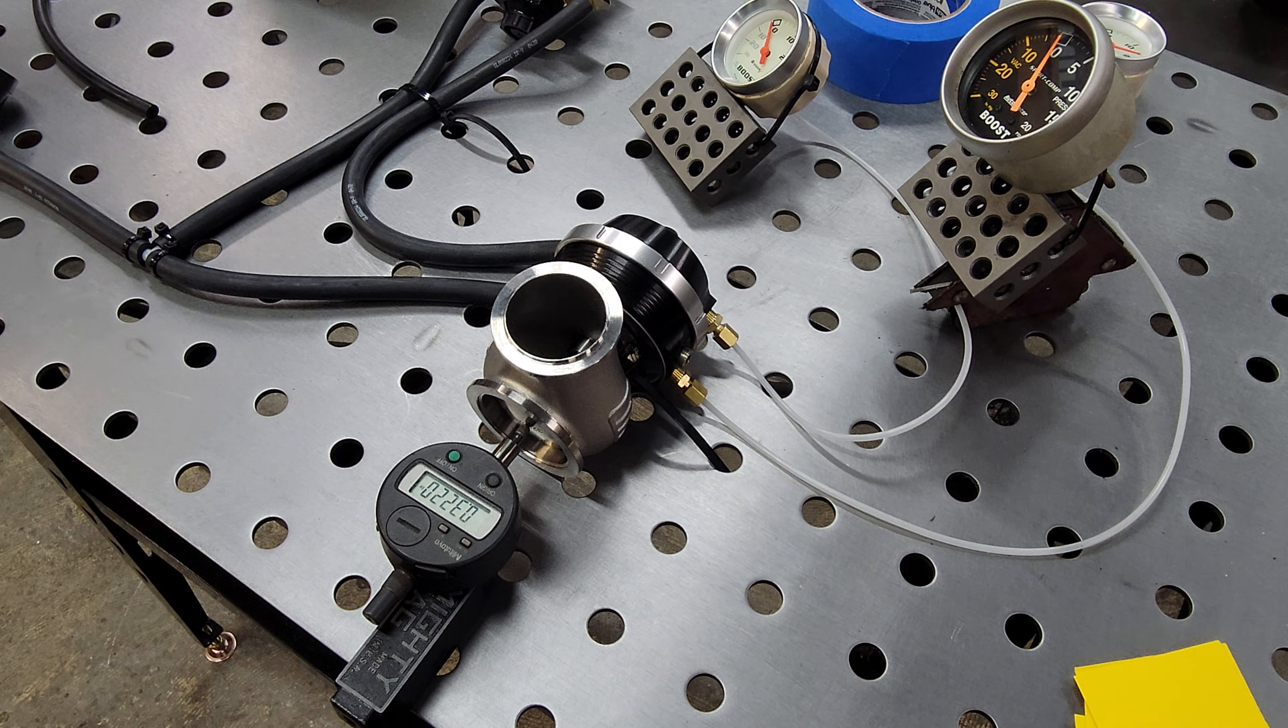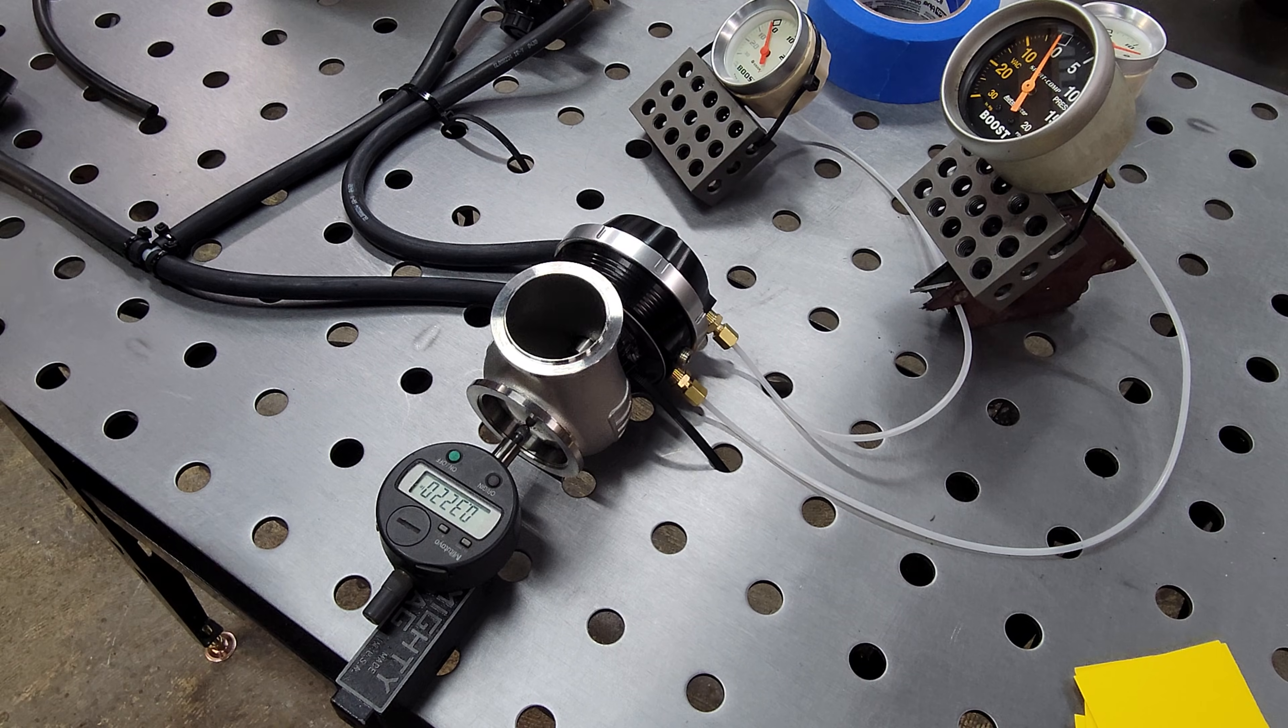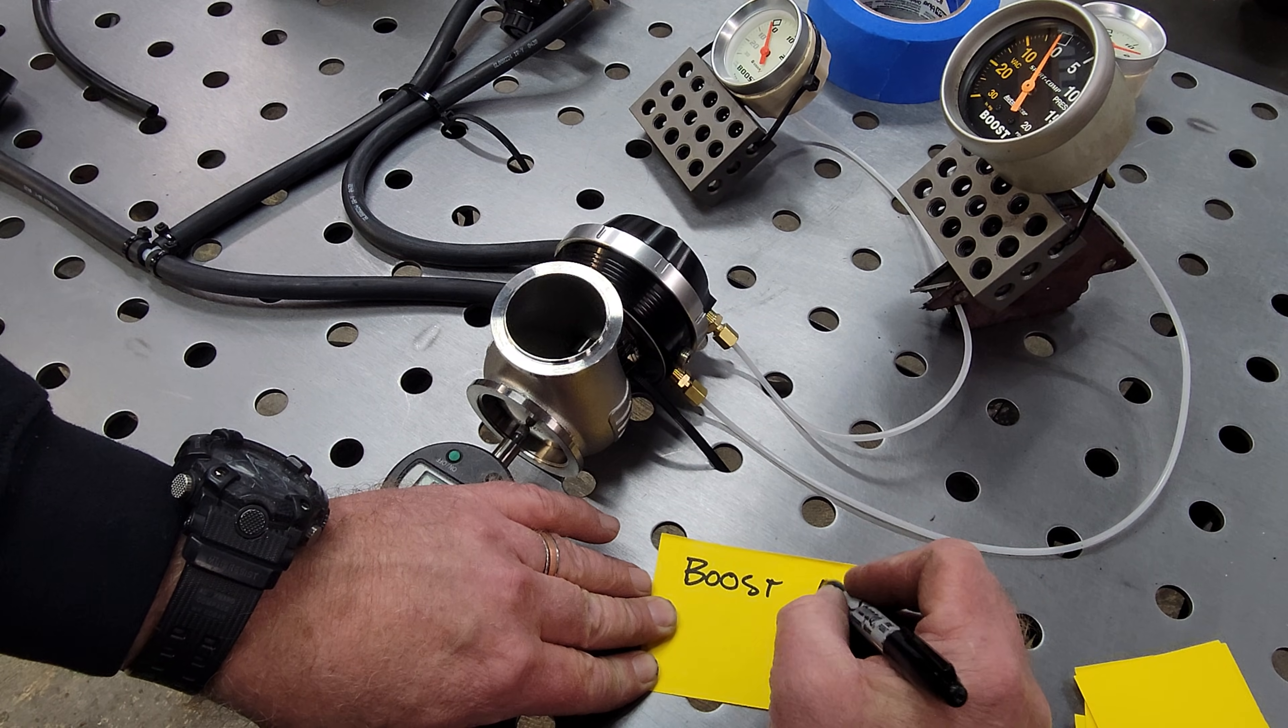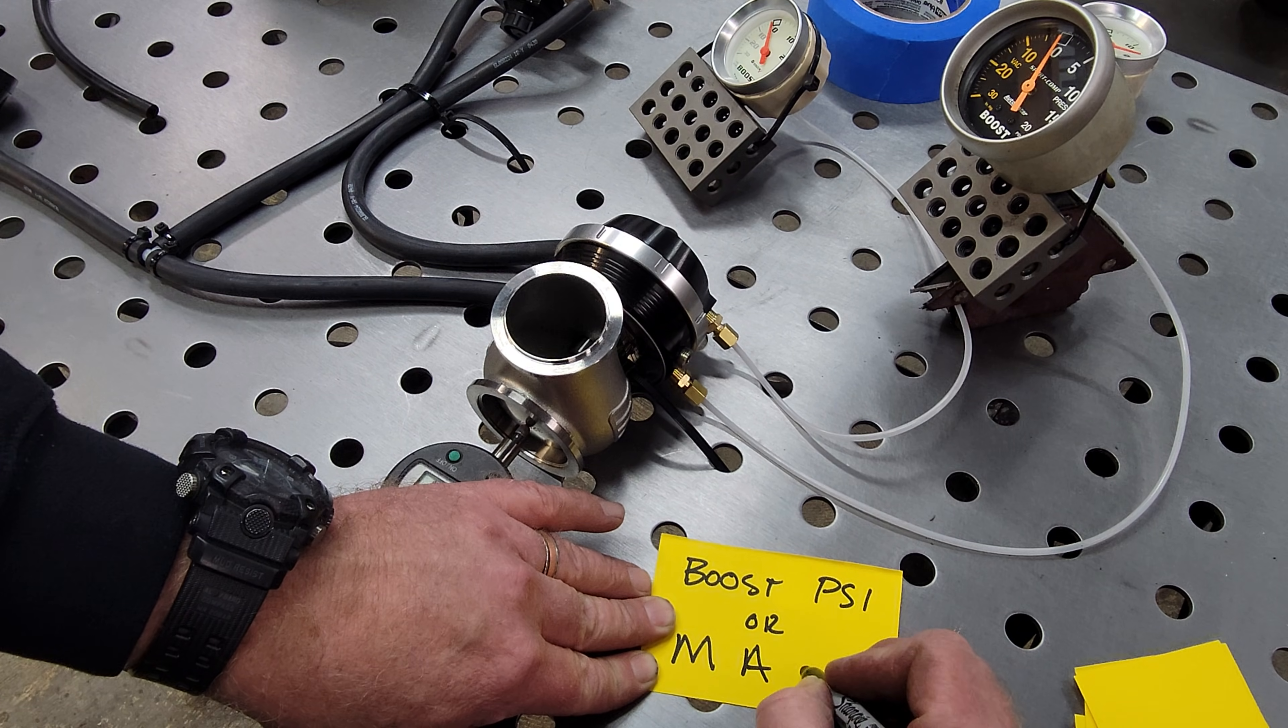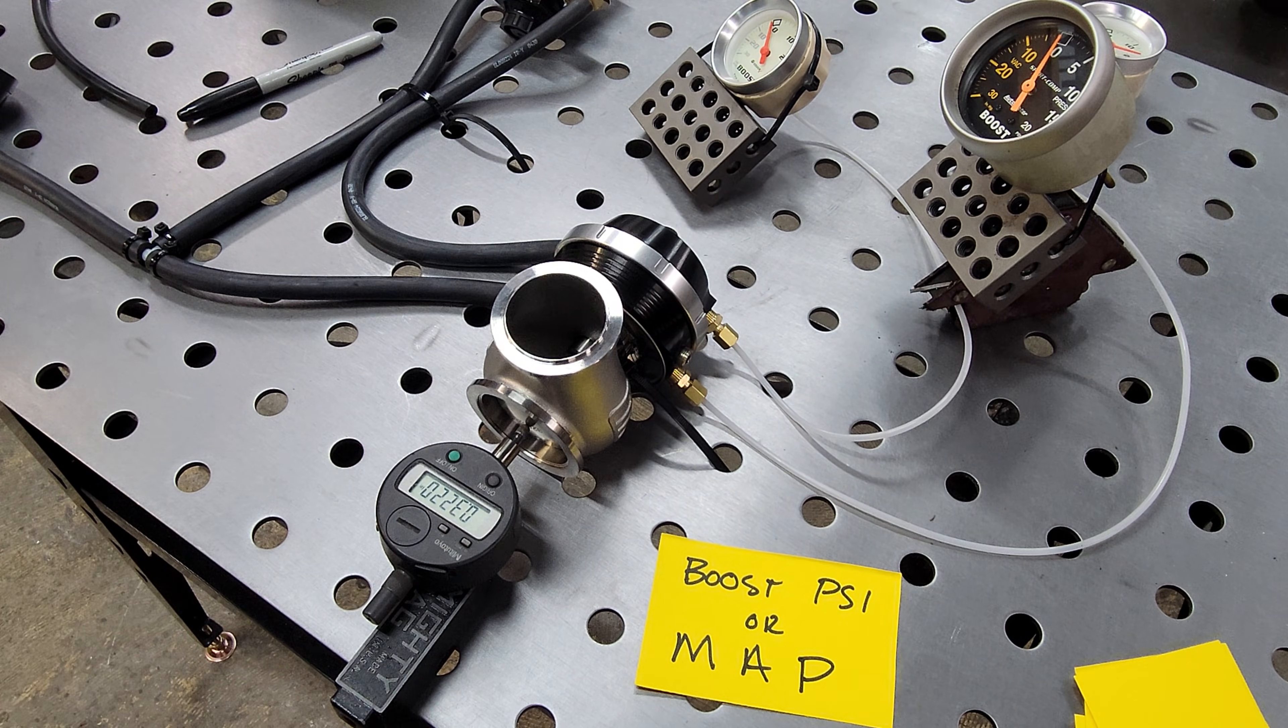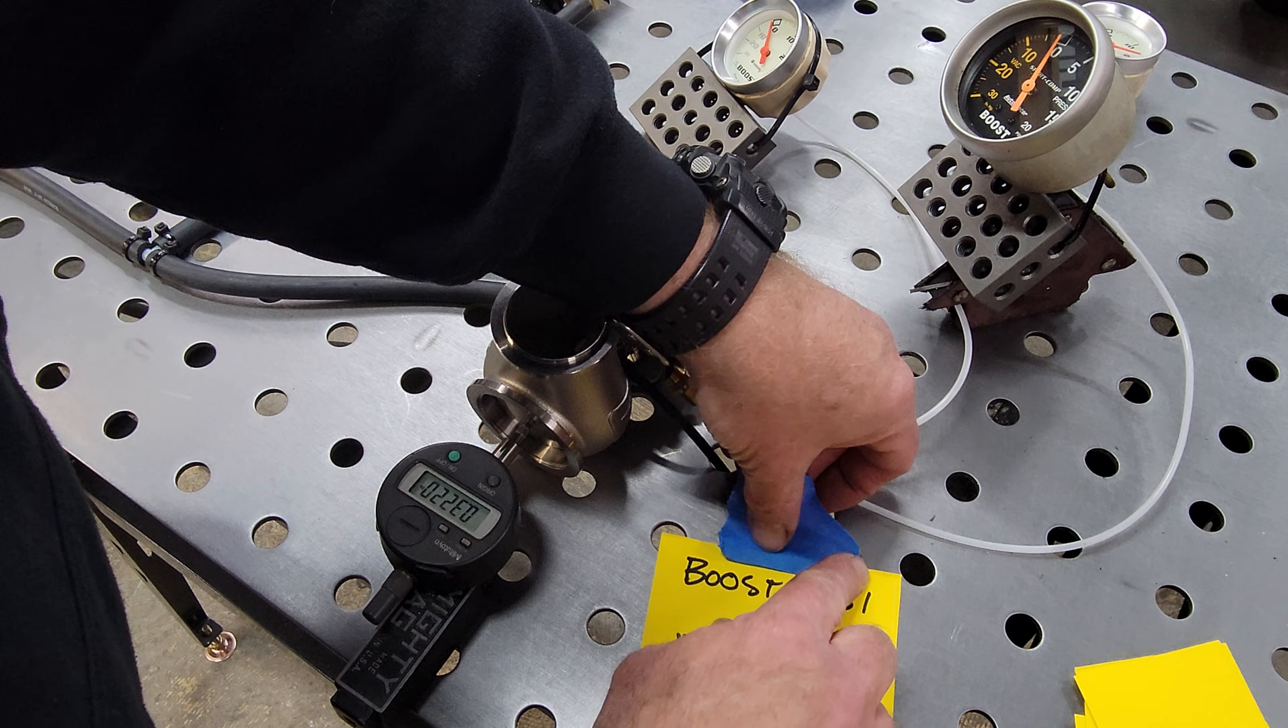We are going to, if I can find my marker, simply call this boost PSI or manifold absolute pressure. So, that large gauge will always represent your boost pressure that you are seeing in your intake manifold, or at least what you're hoping to see in your intake manifold.